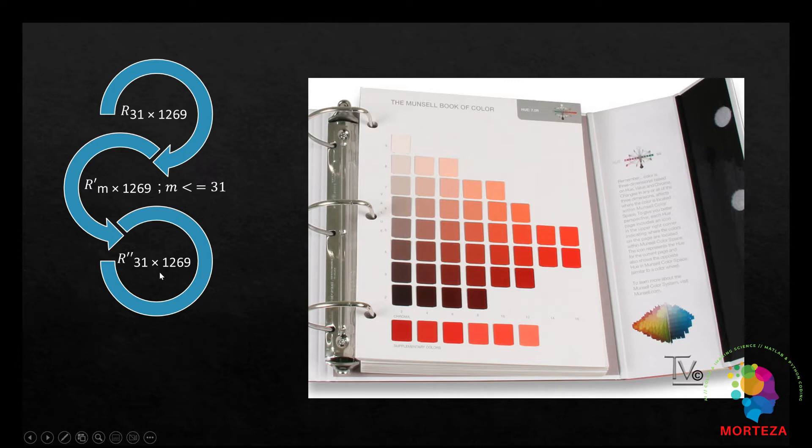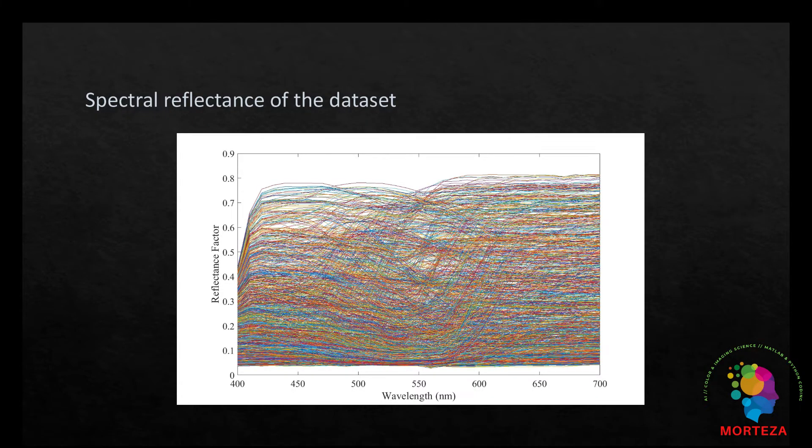First we compress it and then we recover, we reconstruct the data again. This is the process of compression and subsequent reconstruction. The spectral reflectance of each sample has been measured from 400 to 700 nanometer at 10 nanometer intervals, hence 31 dimensions. Here's the spectral reflectance of the data that we're going to use.